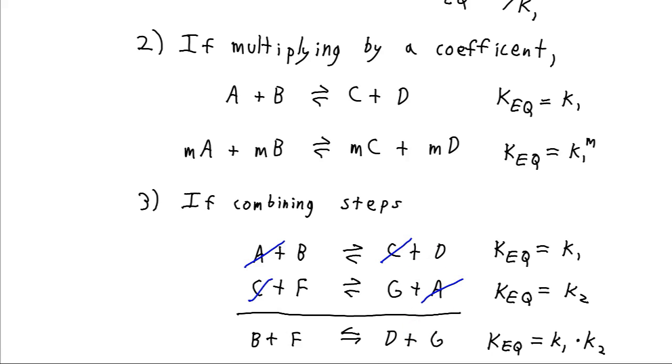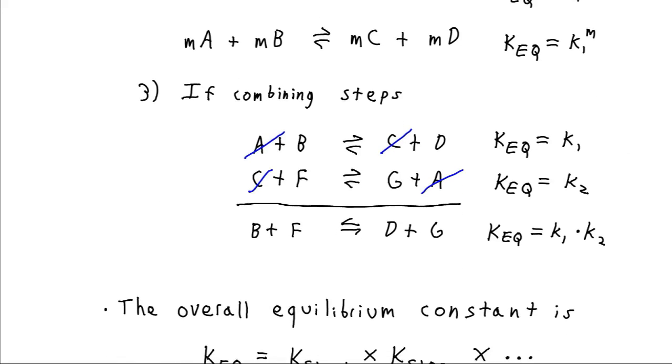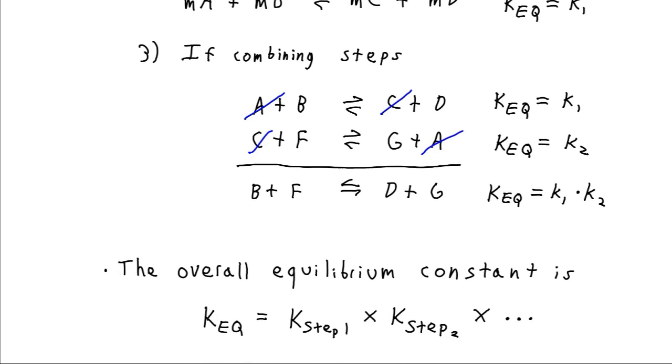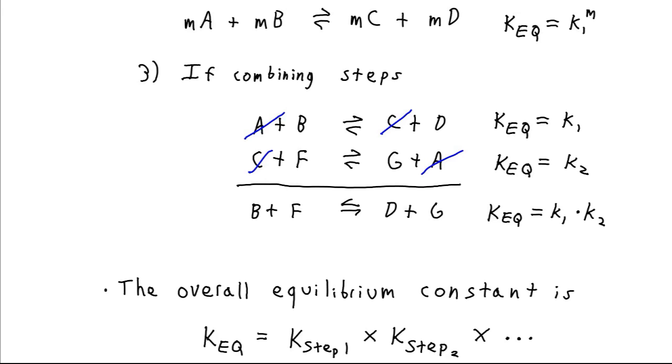And the equilibrium constant for this reaction, which is the overall expression, will just be multiplying the equilibrium constants from those previous reactions. So in general, the overall equilibrium constant for a series of reactions is just going to be the product of the equilibrium constants of the individual steps of that reaction.